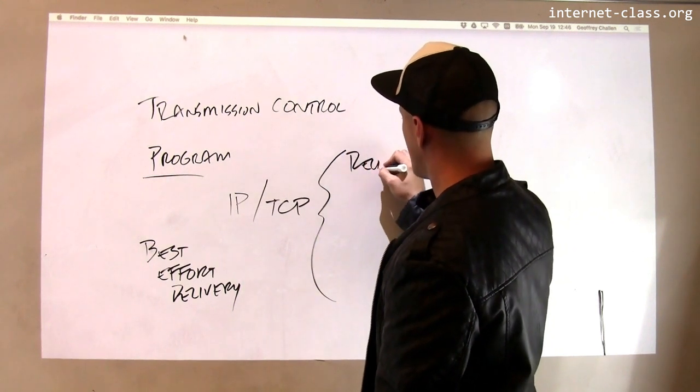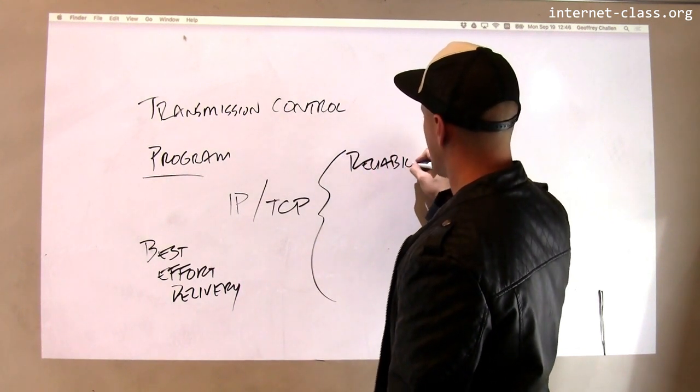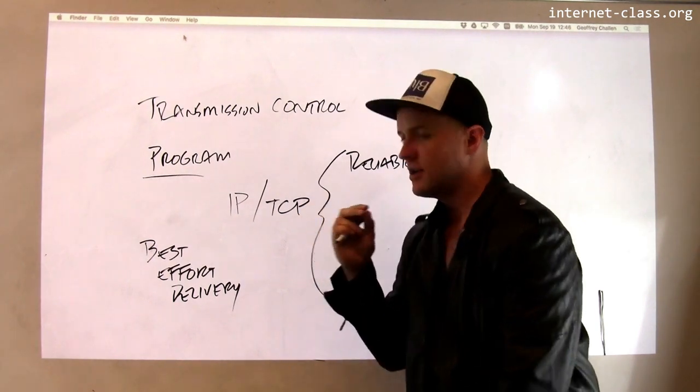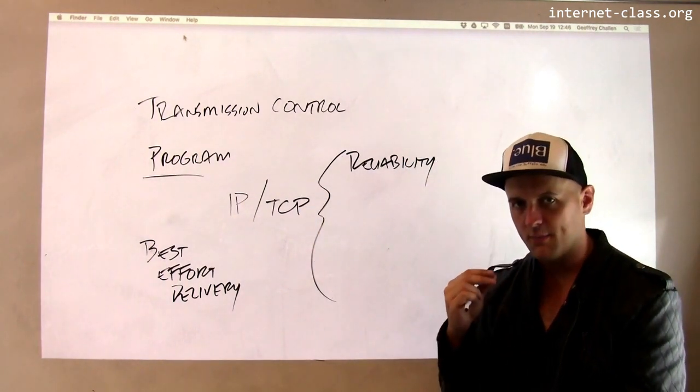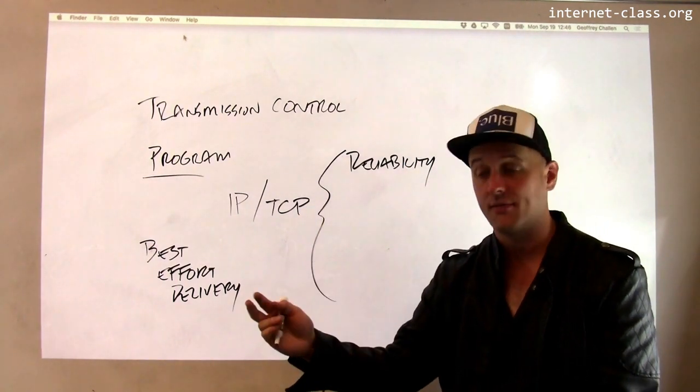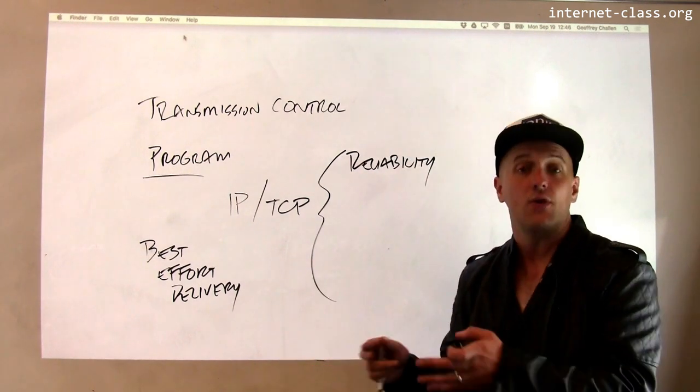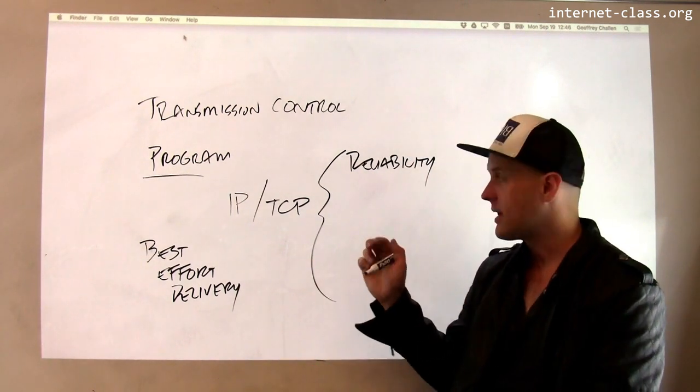What does TCP add to IP? The first thing that's quite important is reliability. TCP ensures that data transmitted from one host to another arrives, and also that it arrives in order. So TCP provides both reliability and ordering.